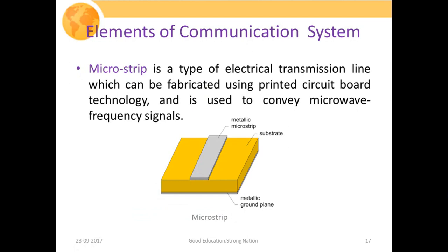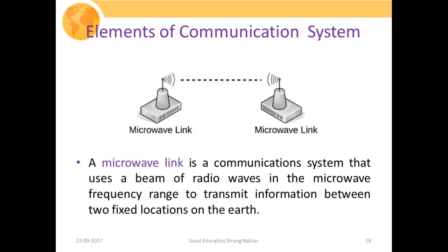Microstrip is a type of electrical transmission line that can be fabricated through PCB technology — printed circuit board technology — used to convey microwave frequency signals. The metallic strip and metallic ground plane are separated by the substrate material. Microwave links are another type of physical medium. Mobile towers seen nowadays are the same microwave links, operating on line-of-sight communication and transmitting a highly concentrated beam at microwave frequencies. A microwave link is a communication system that uses a beam of radio waves in the microwave frequency range to transmit information between two fixed locations.